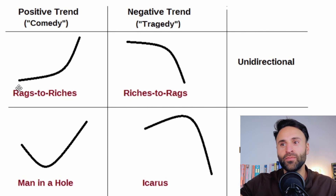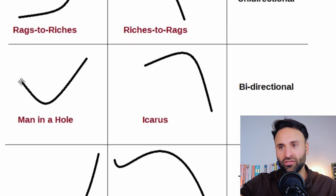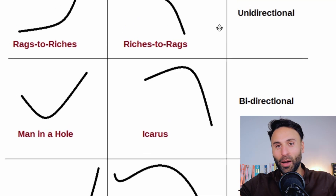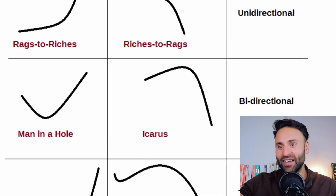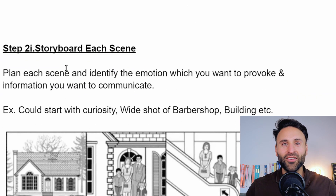It's fascinating how so many movies follow these exact story arcs. You've also got rags to riches — negative to positive; man in the hole — positive to negative to positive; riches to rags — positive to negative; and of course the Cinderella arc. Once you've chosen your story arc, your next step will be to storyboard the actual scenes and ideas.